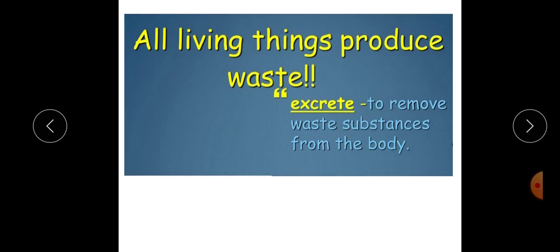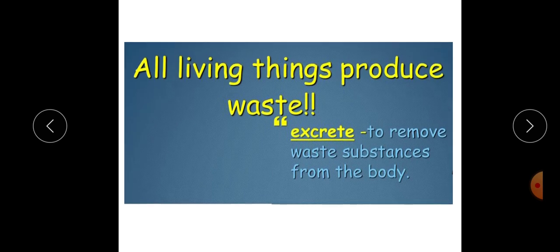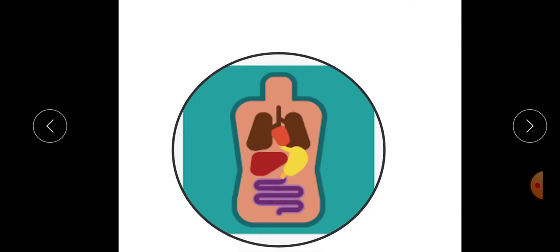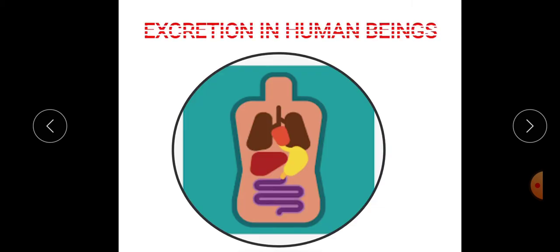Similarly, the bodies of living organisms generate different kinds of waste. This waste needs to be removed from the body at regular intervals of time. The process by which wastes are removed from the human body is called excretion. And this is what we are going to discuss today: excretion in human beings.